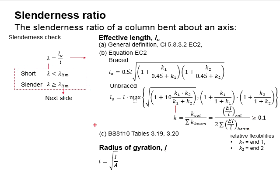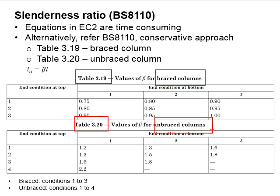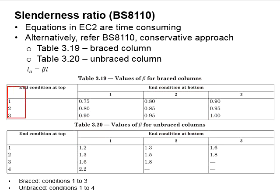You may also determine the effective length of the column by referring to BS8110. For the braced column, the conditions are 1 to 3. As for the unbraced column, there are 1 to 4 conditions.